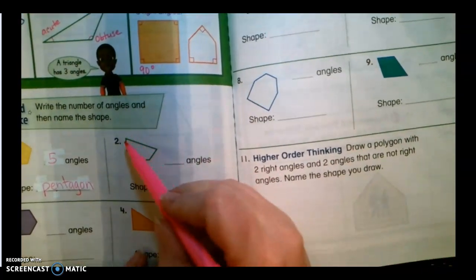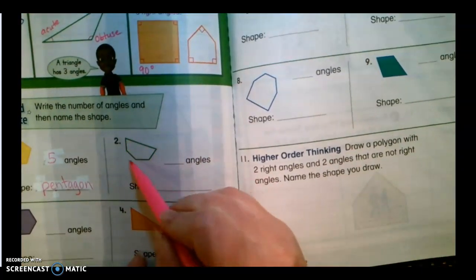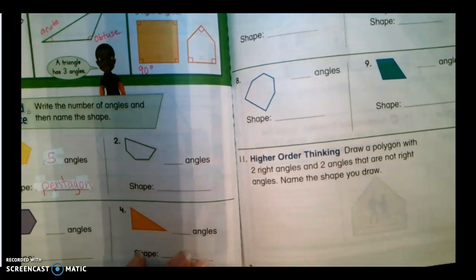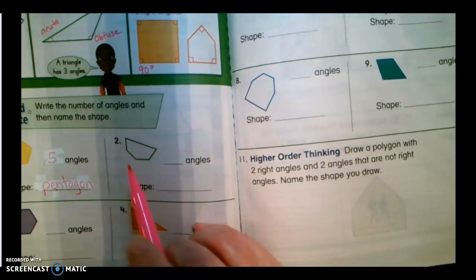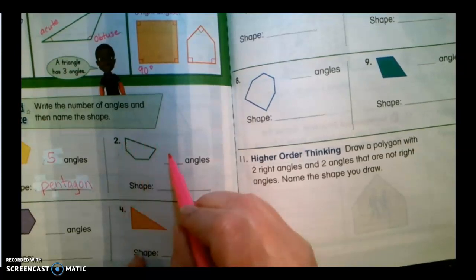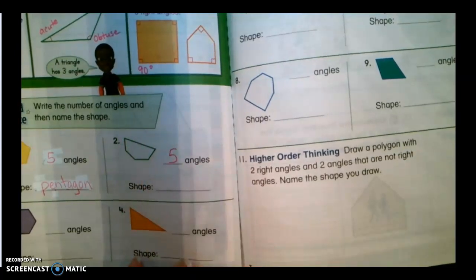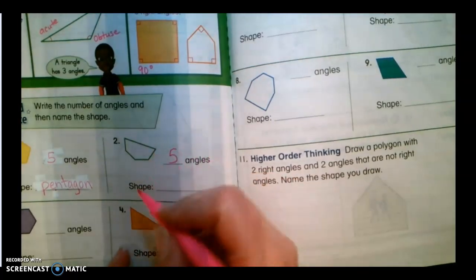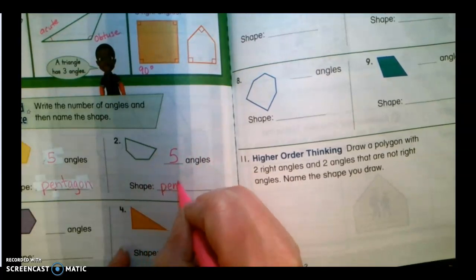All right. Let's look at the next shape. This shape has one, two, three, four, five. It has five edges. I bet it also has five angles. One, two, three, four, five. It does. It has five angles also. It's also called a pentagon.